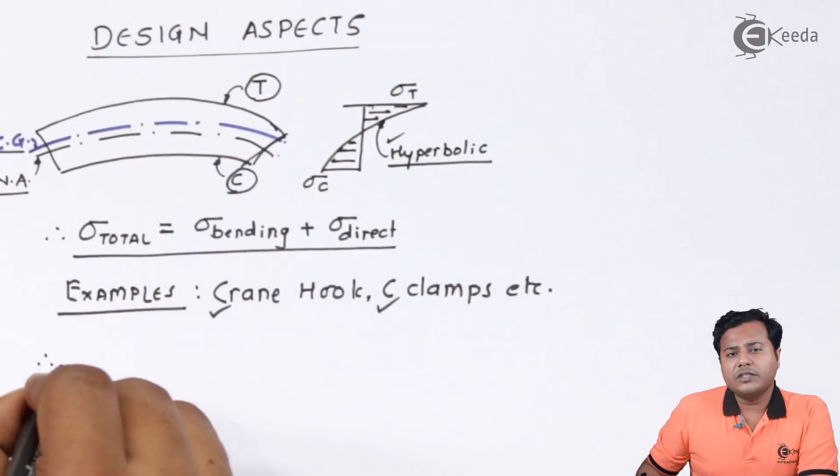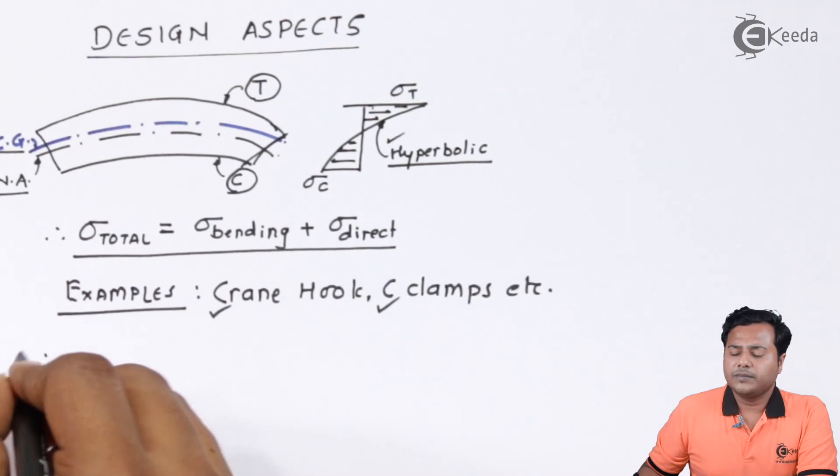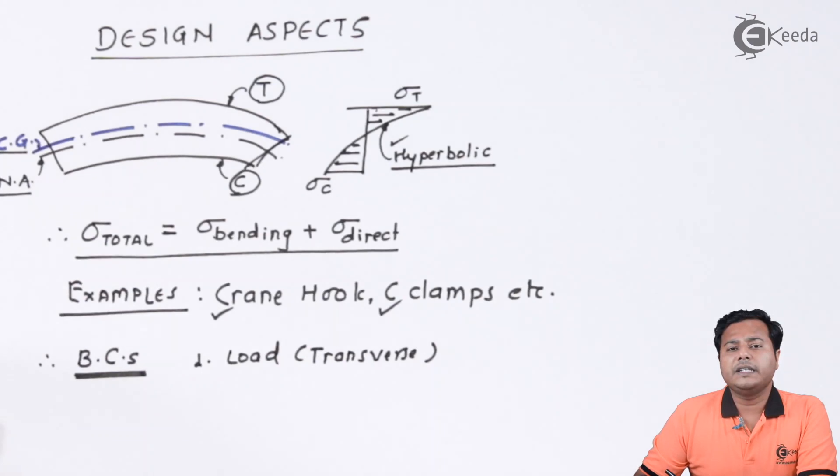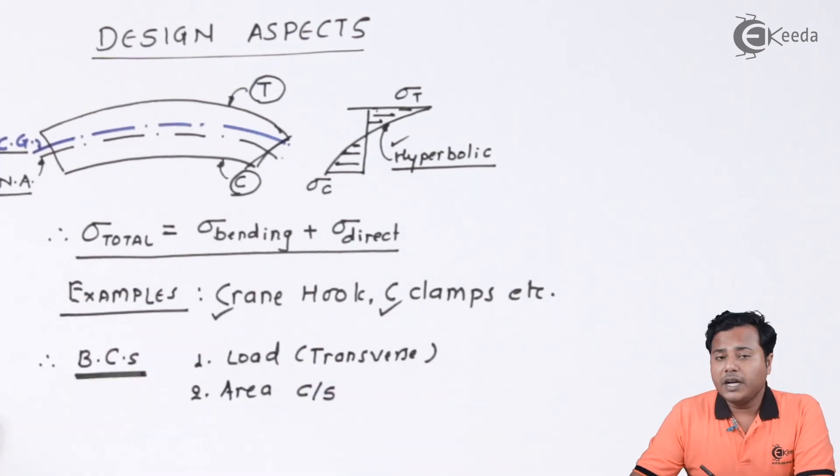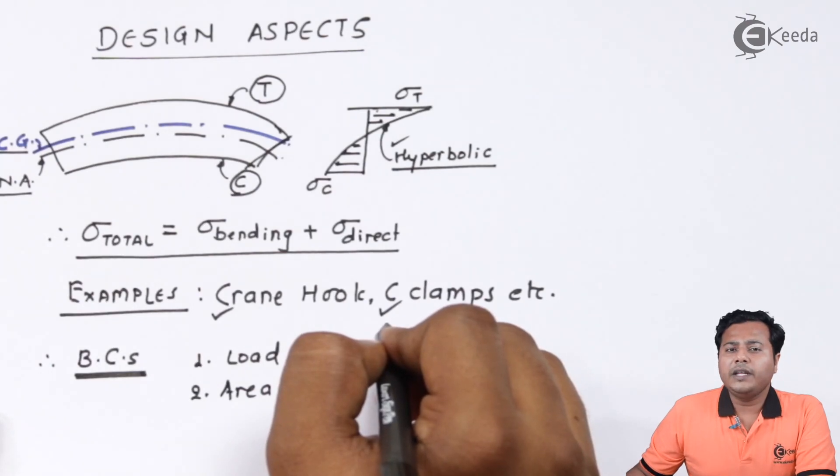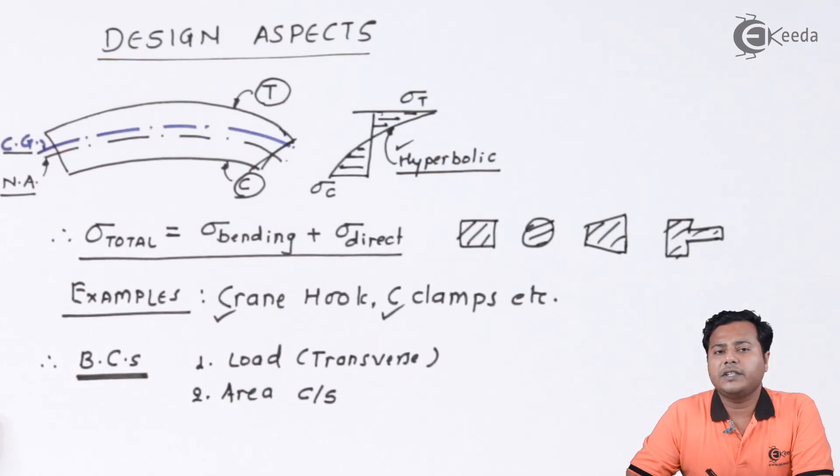Second important thing is I am going to list down some of the boundary conditions that act on the body and are related with the curved beams. Very first is the load, that is the transverse load. Second important parameter is the area of the cross section. Let us try to understand all these examples we are discussing about crane hooks or C-clamps. They can come into various cross sections. The cross sections can be triangular, they can be circular ring, rectangular, trapezoidal. And with the advancements of the manufacturing systems, we can have T sections, I sections, even elliptical sections for crane hooks also.